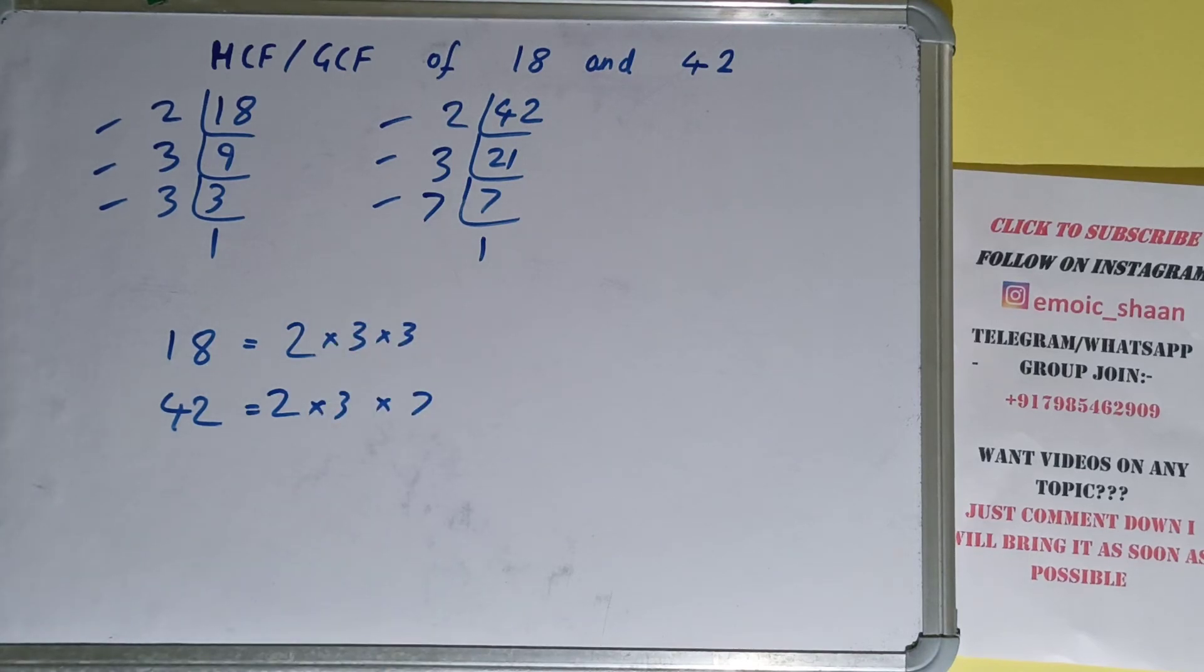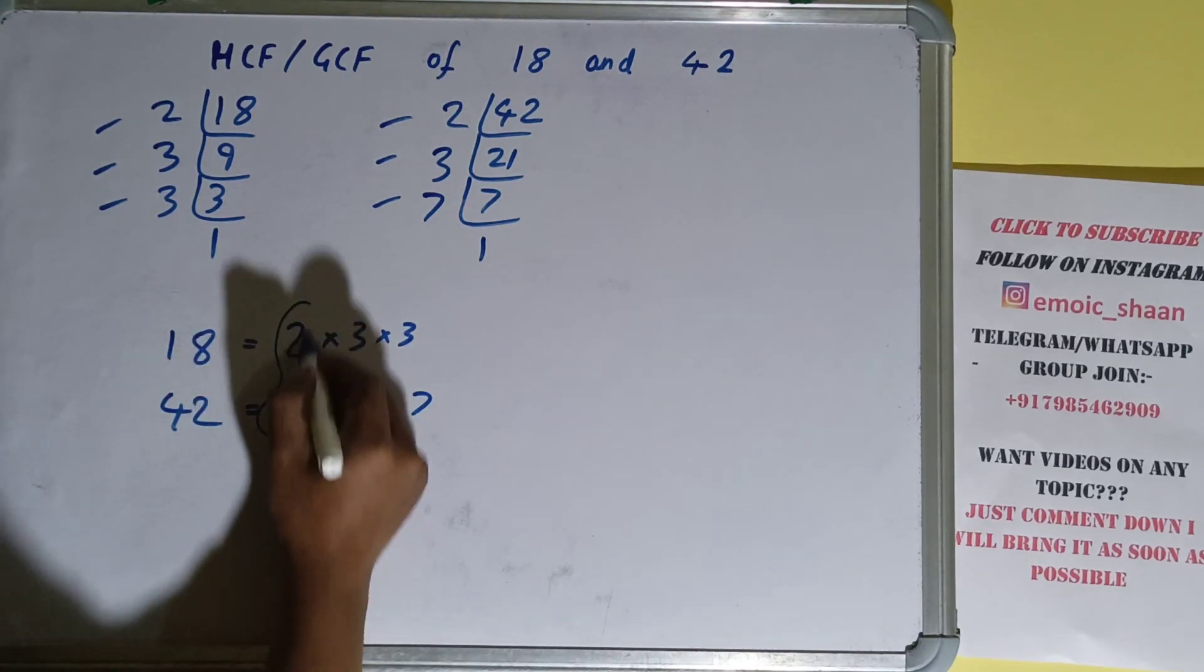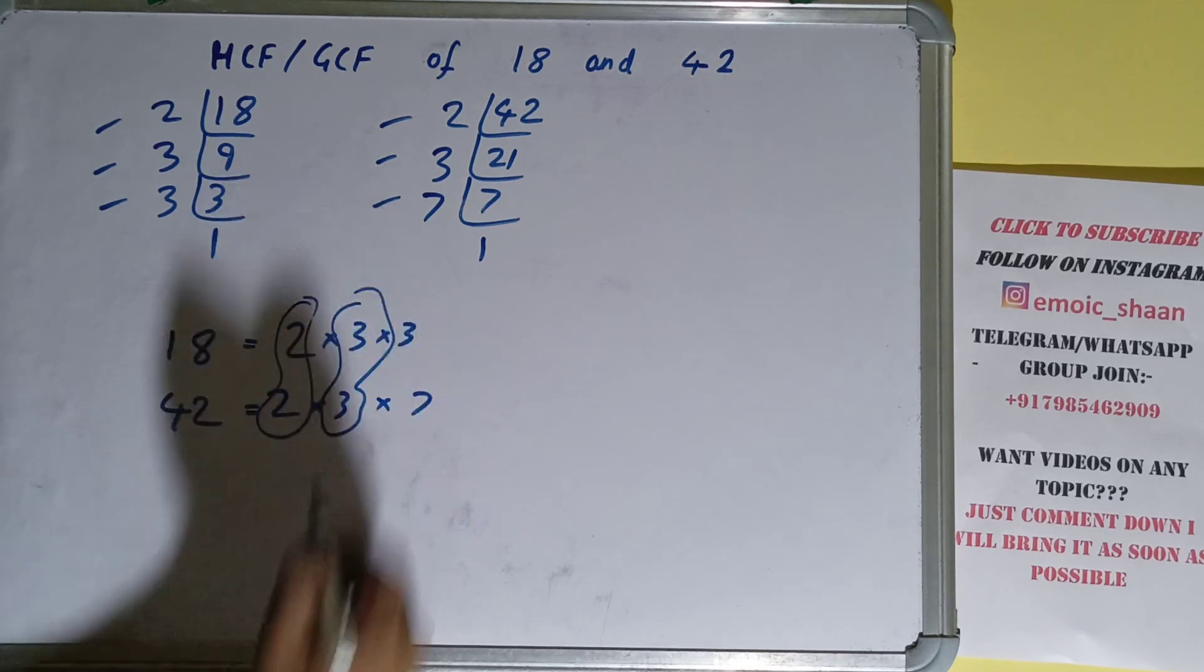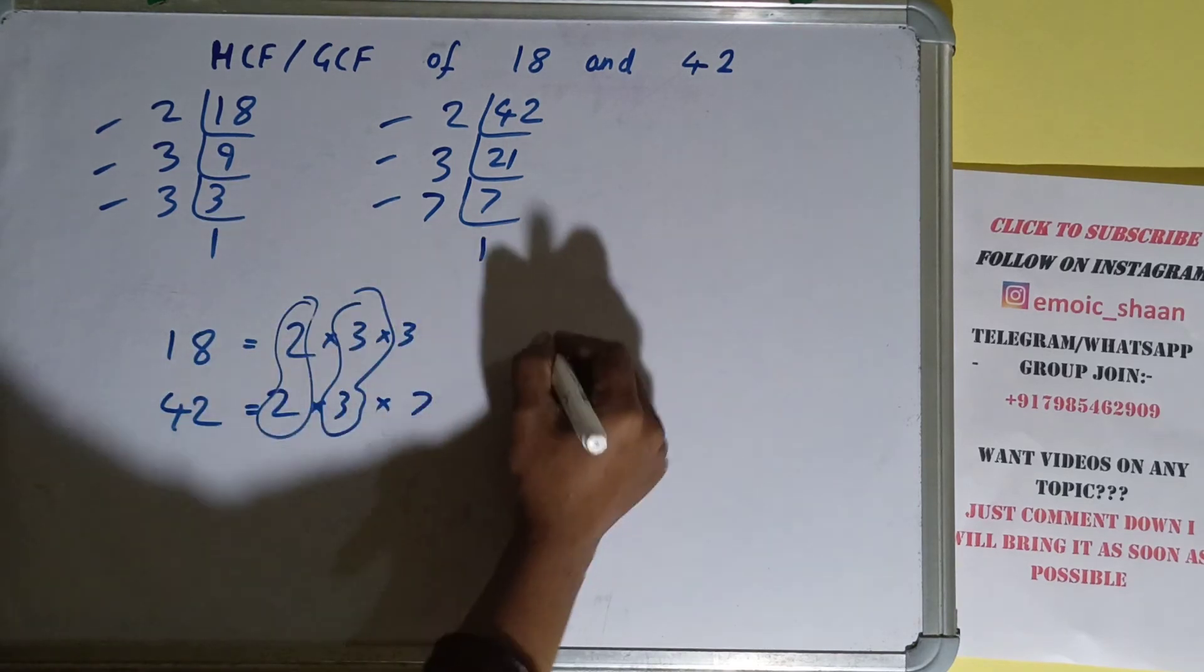The next thing we need to do is circle out the common prime factors. We have this 2 in common and we have this 3 in common. Do we have anything extra in common? No. So the answer will be 2 × 3, which gives you 6.